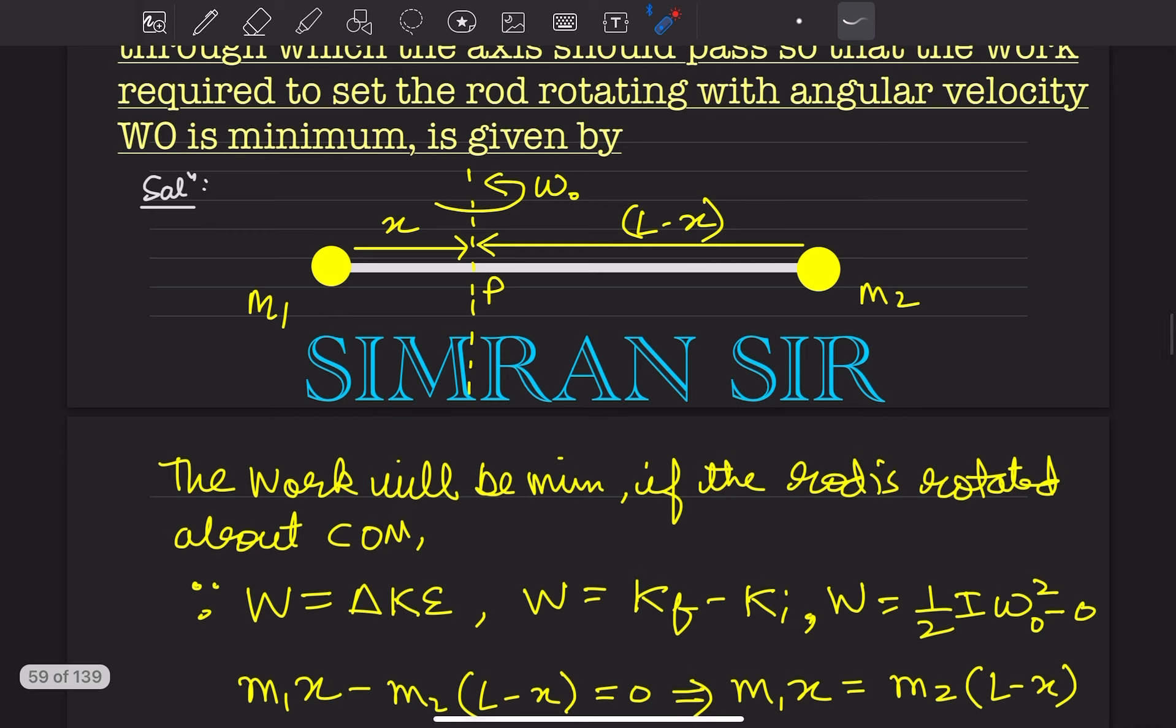If we rotate the rod about the center of mass, the moment of inertia is minimum. Because I is minimum, work done is minimum. Work will be minimum if the rod is rotated about center of mass. Why?